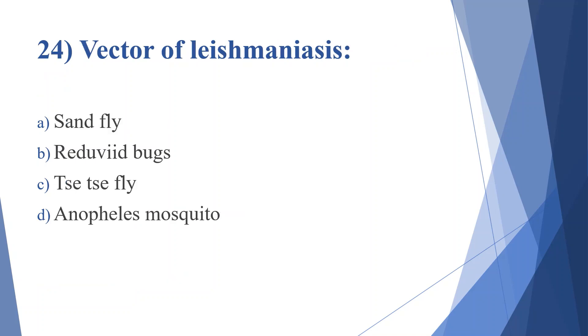Twenty-fourth question: vector of leishmaniasis. Option A: sandfly. Option B: reduviid bugs. Option C: tsetse fly. Option D: Anopheles mosquito. Answer is option A, sandfly.